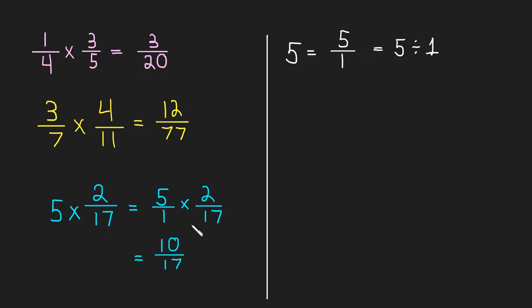So we could write this intermediate step where we write 5 as 5 over 1, but I recommend that you don't even do that. You don't even waste the ink doing that unless it really helps you.